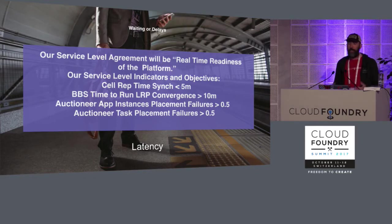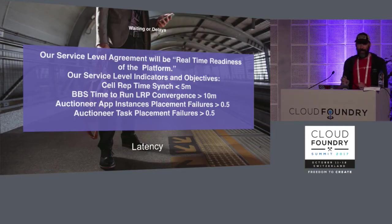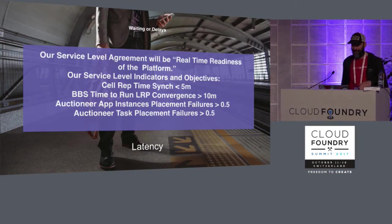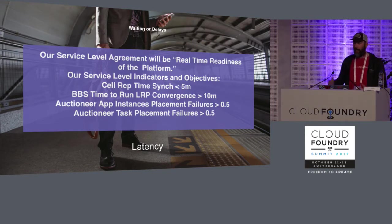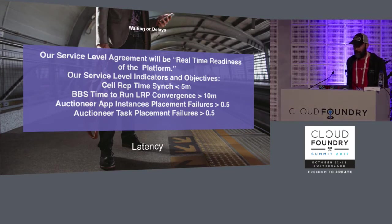Our service level agreement would be something like real-time readiness of the platform. Our indicator would be cell rep time and auctioneer task placement failures. The number on the right is our objective — we want that number to always be greater than 0.5. Please do not use these numbers in production; these are just examples.